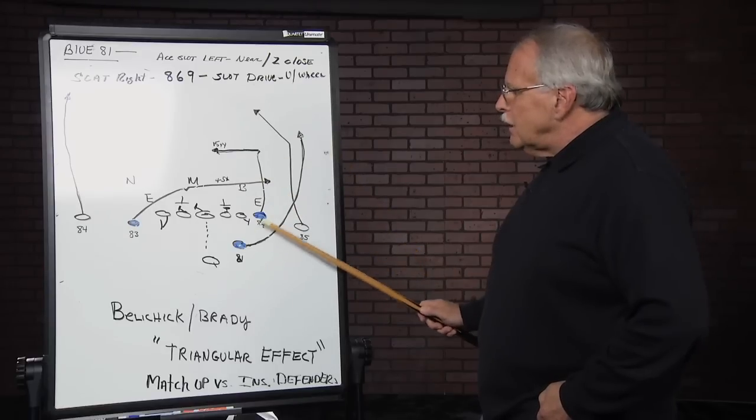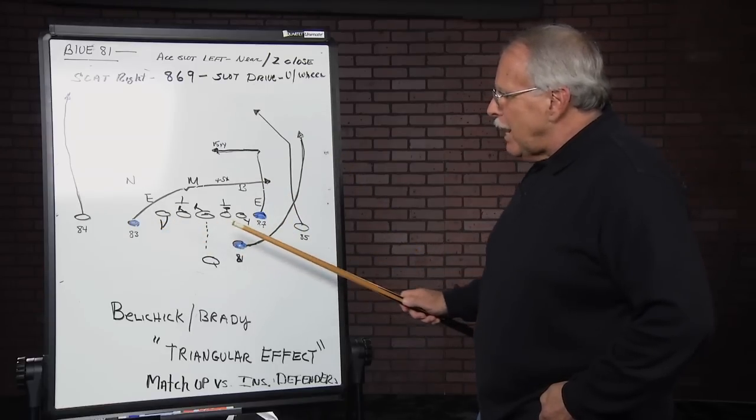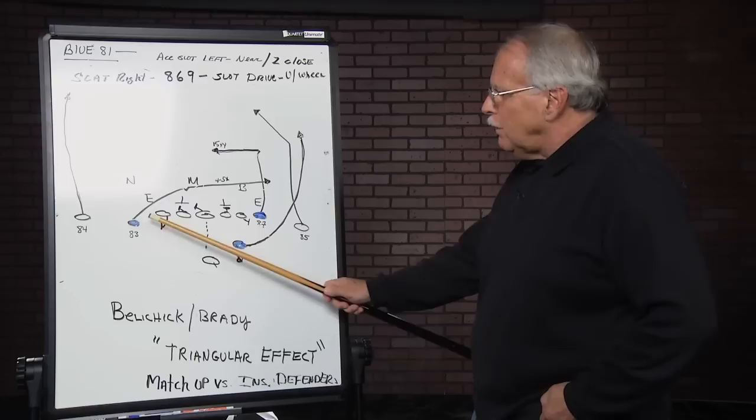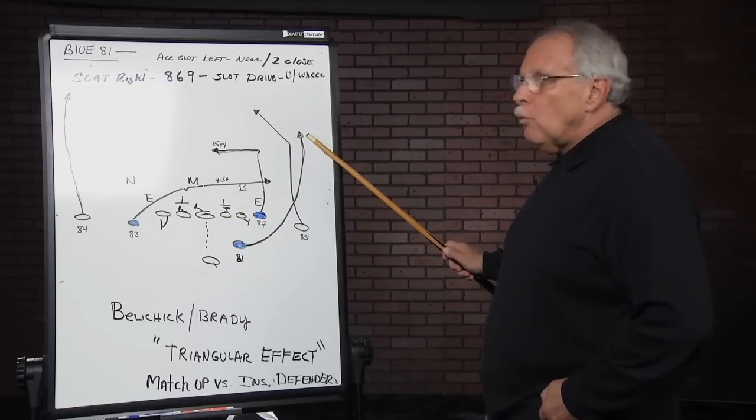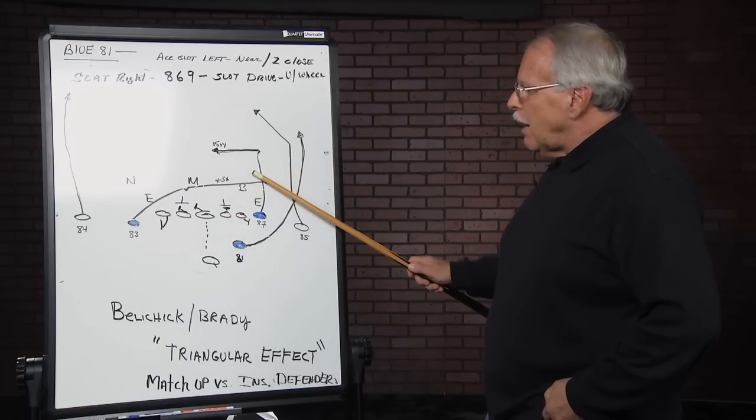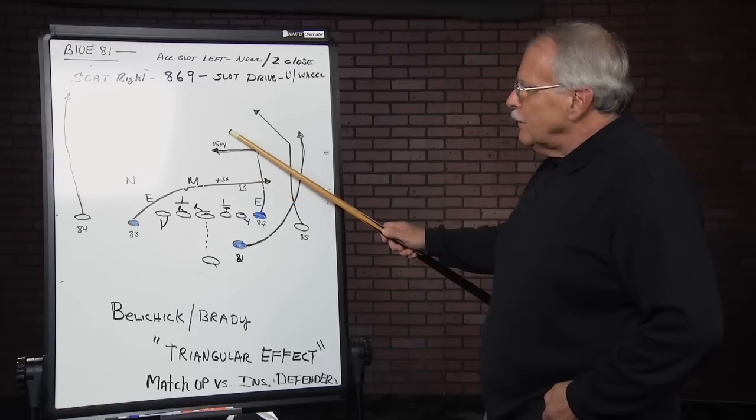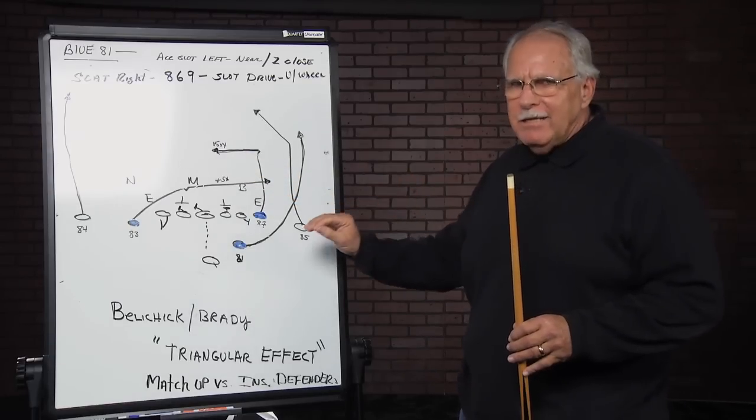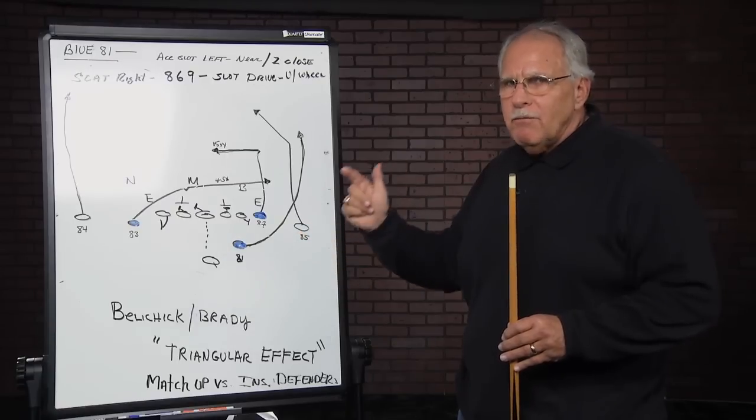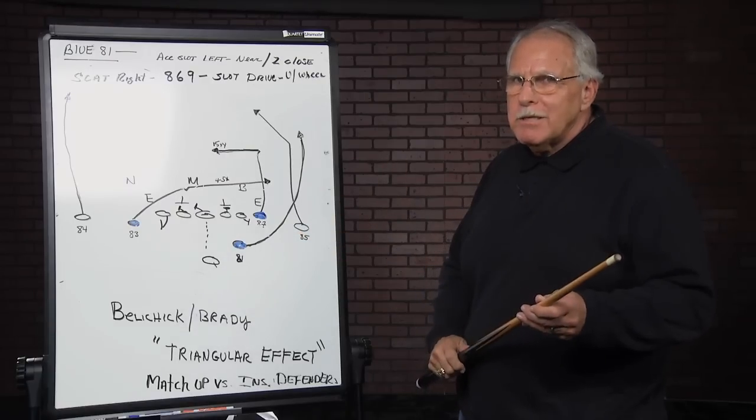So again, you're using a triangular effect to maximize your three best players on their matchups underneath, starting with a wheel route first, drive route to Welker second, dig route to Gronkowski third. You may not see this play in exactly this method, but you will see variations on Sunday against the Patriots.